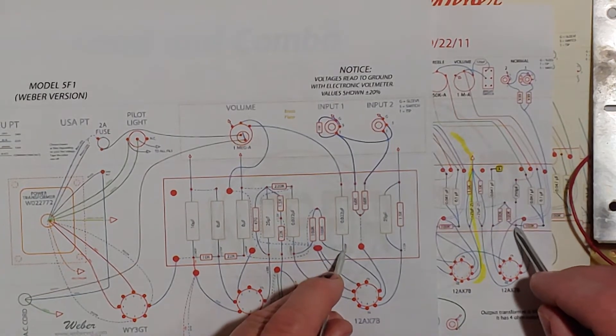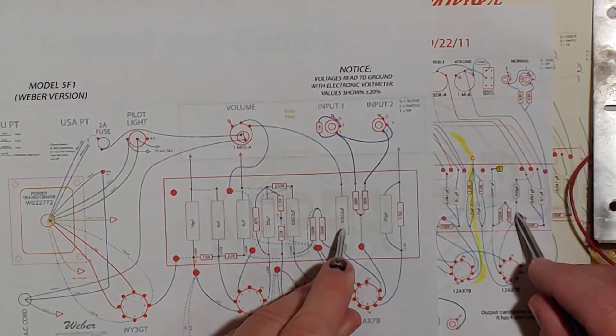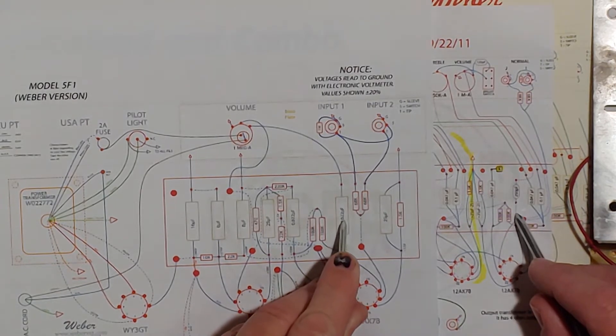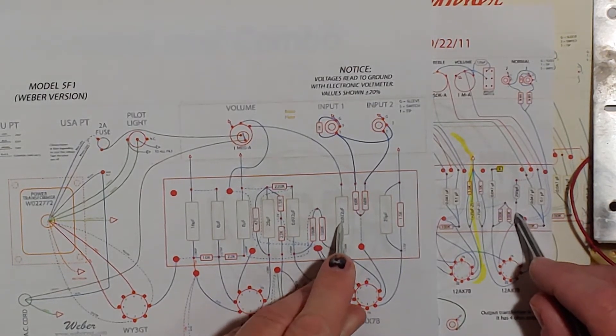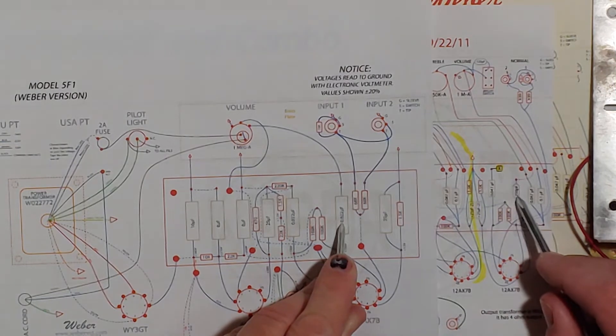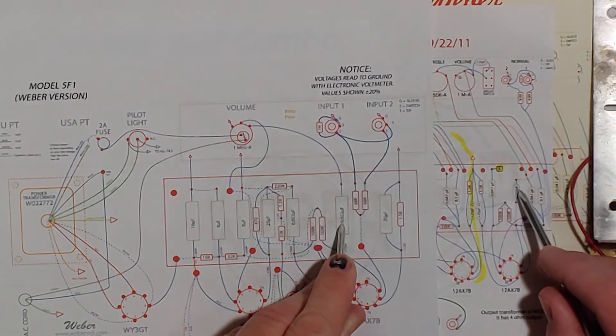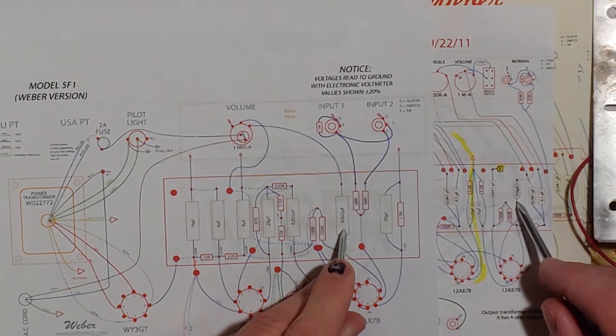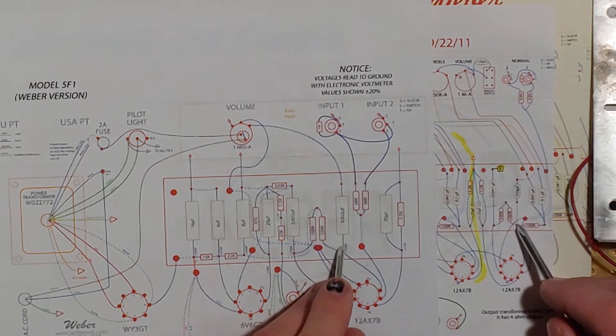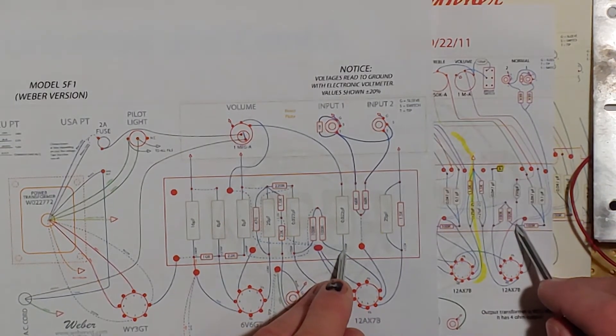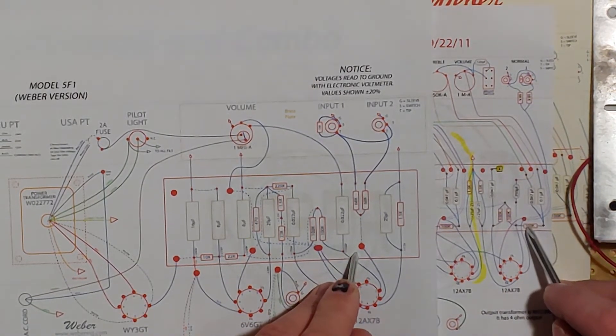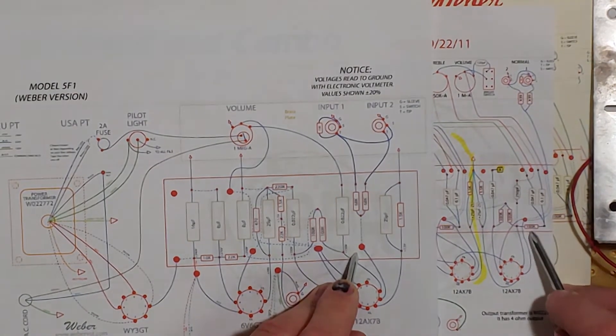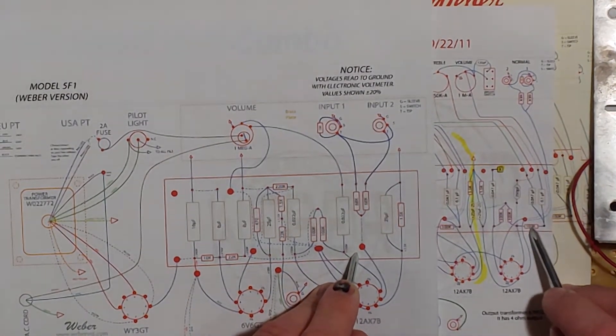Now if you go straight up, on the 5F1 is a 0.022 uF capacitor but over here it's a 0.250 picofarad capacitor. And let's go back down to that junction point. Now if you go to the right here there's nothing on the 5F1 but on the twin reverb there's a 100k resistor.